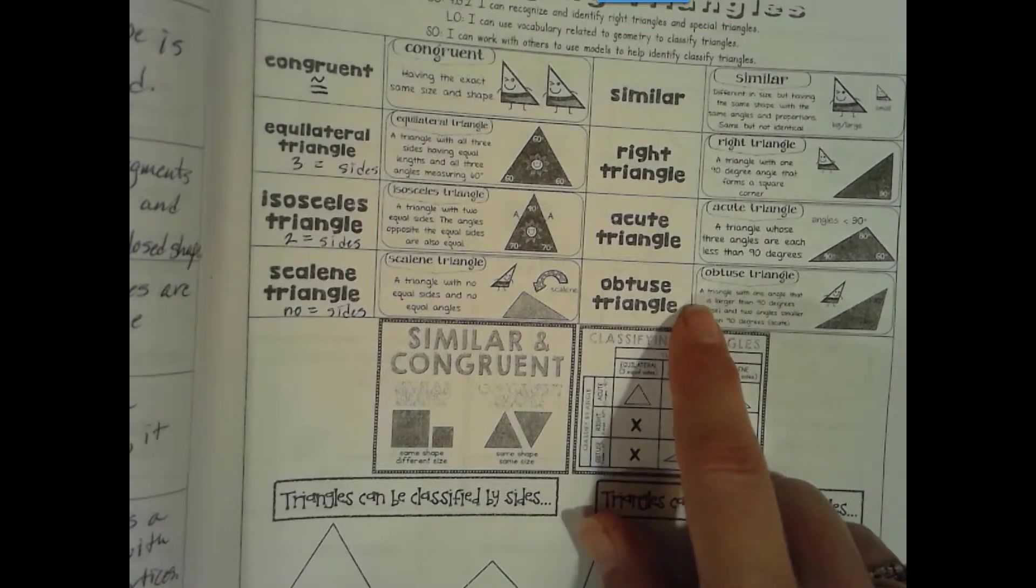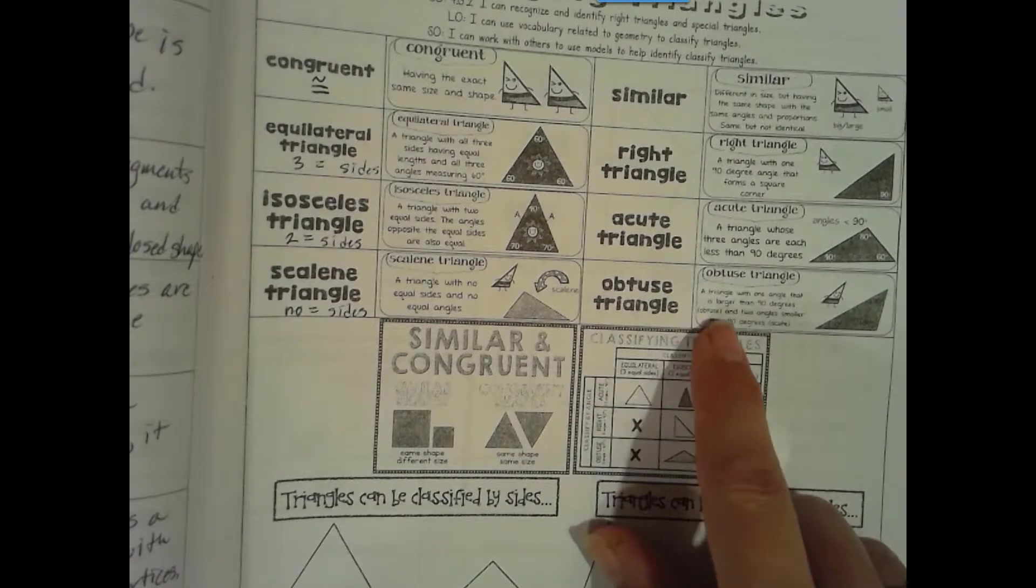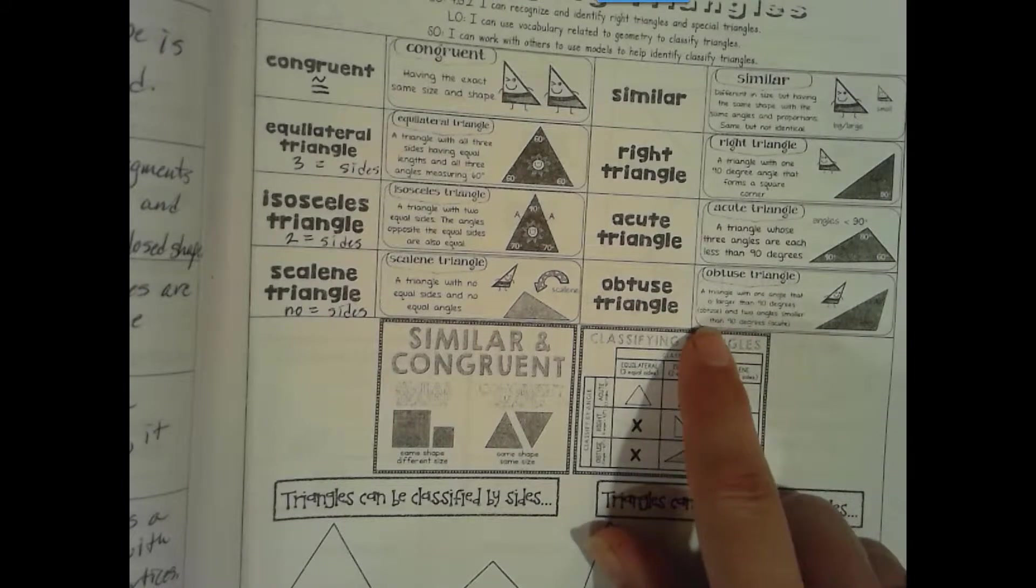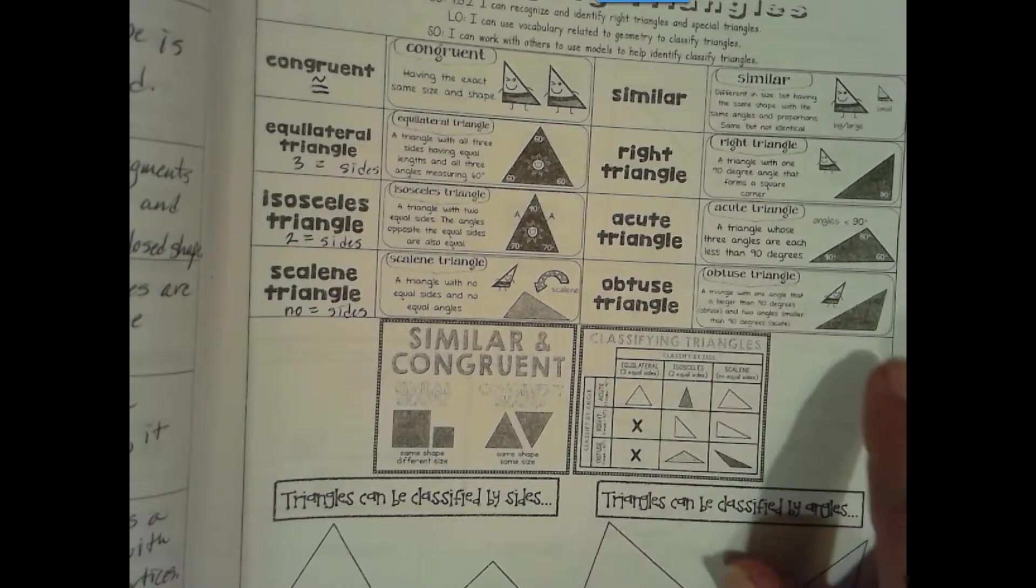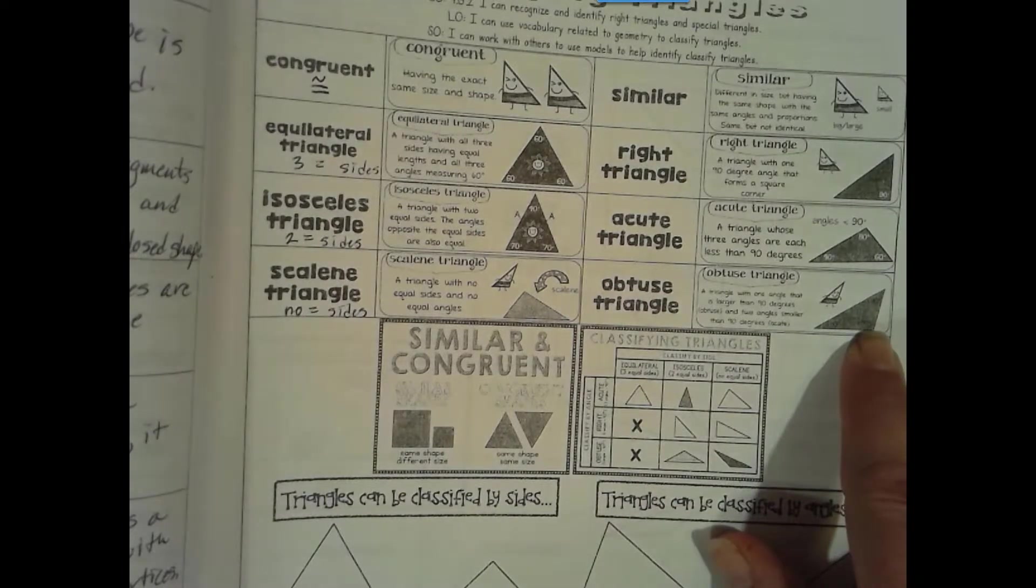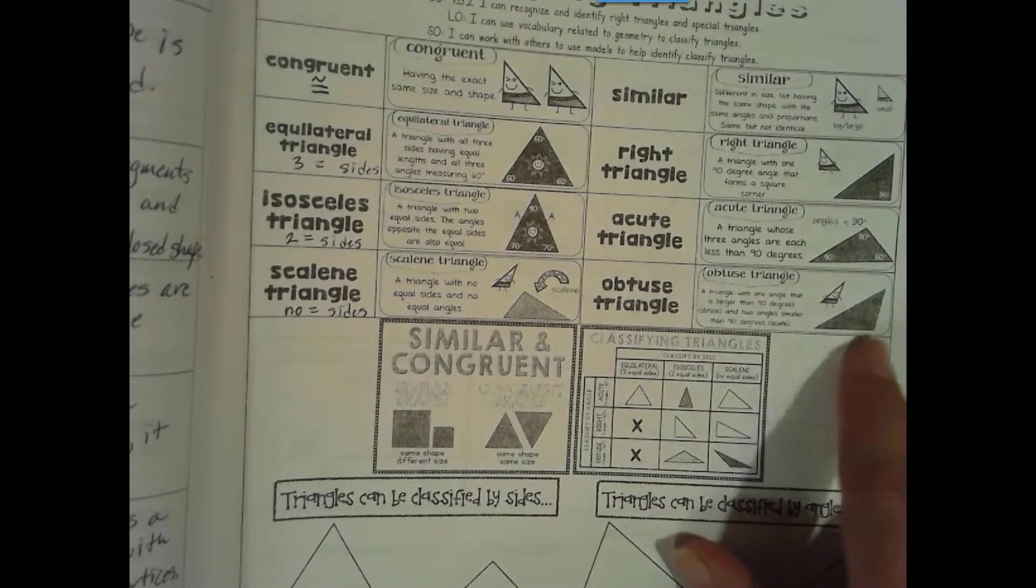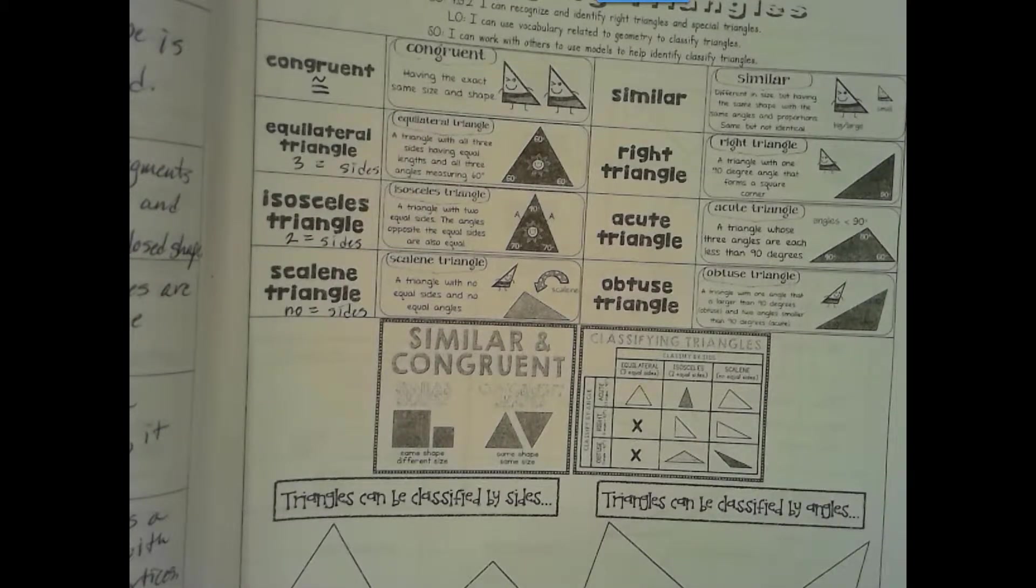Obtuse triangle: a triangle with one angle that is larger than 90 degrees, or obtuse, and two angles smaller than 90 degrees, or acute. So if we have one obtuse angle then the whole triangle is an obtuse triangle.